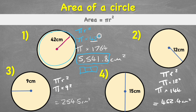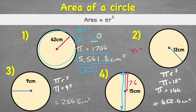In example four, we're not given the radius — we're given the diameter: 15 centimeters. The radius is exactly half of the diameter, so our radius is 7.5 centimeters. Now applying πr²: pi times 7.5 squared — doing it all in one motion on the calculator — gives 176.7 centimeters squared.